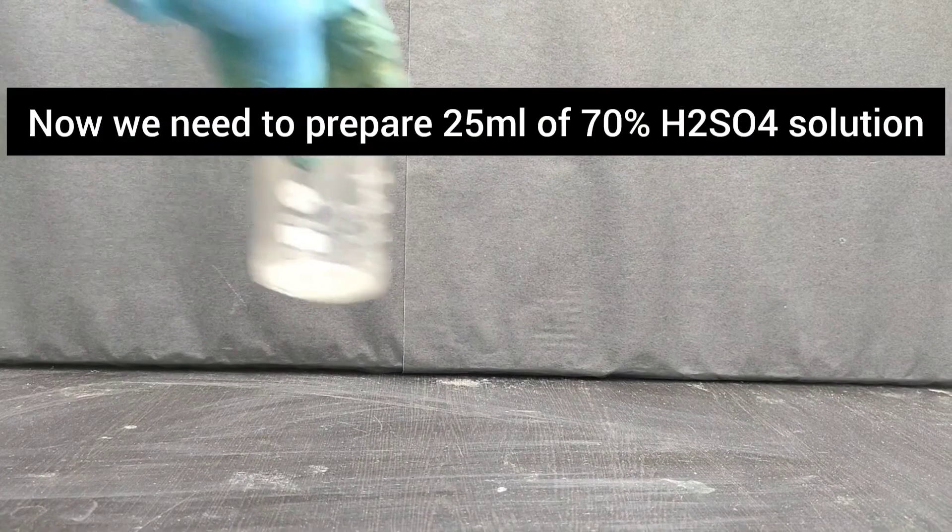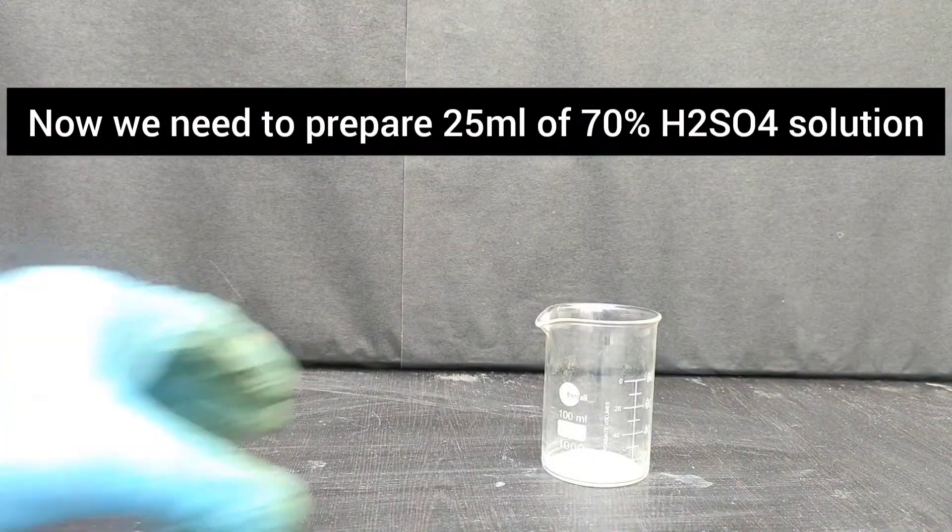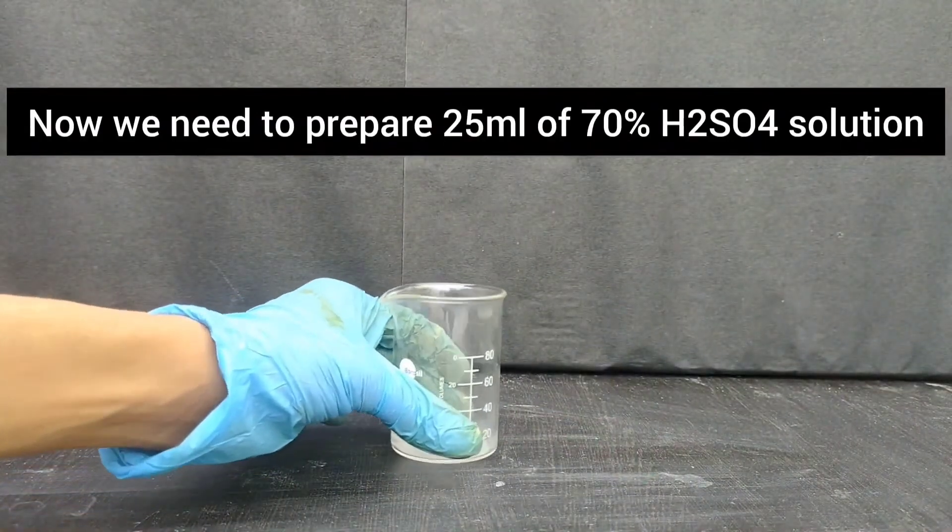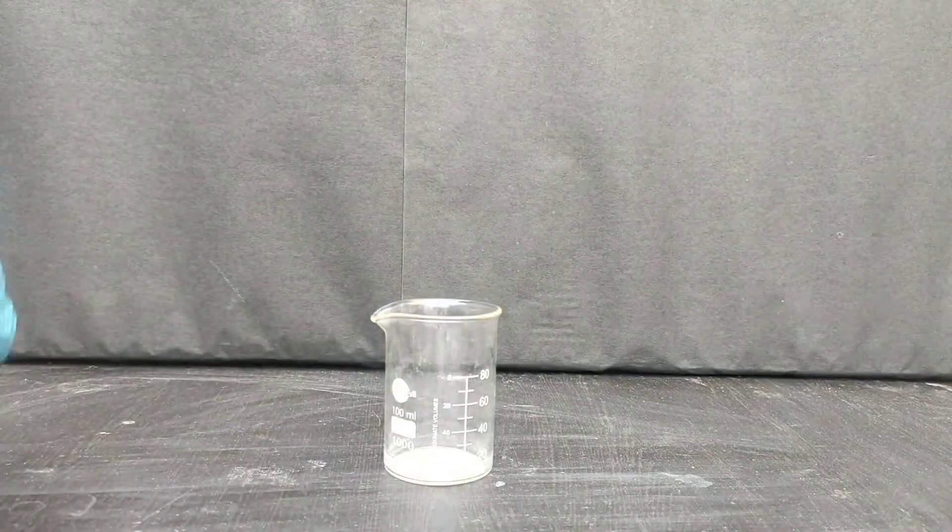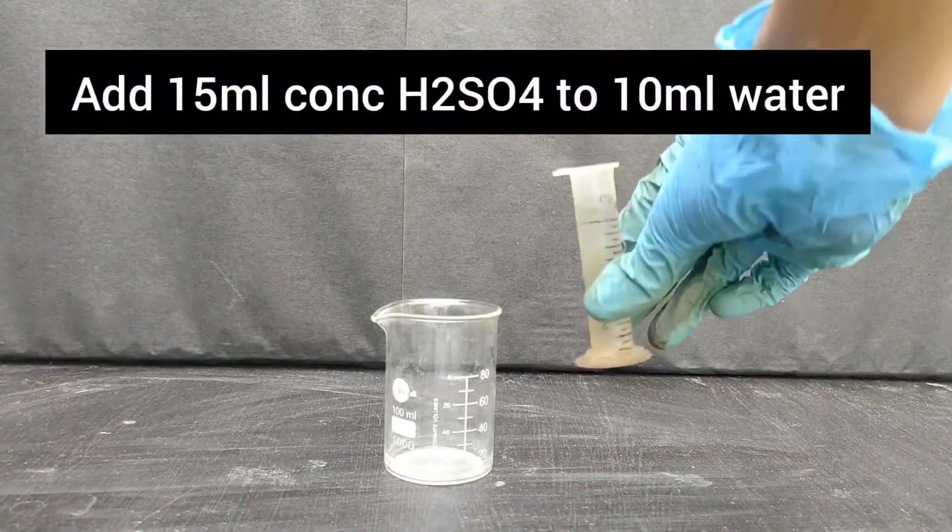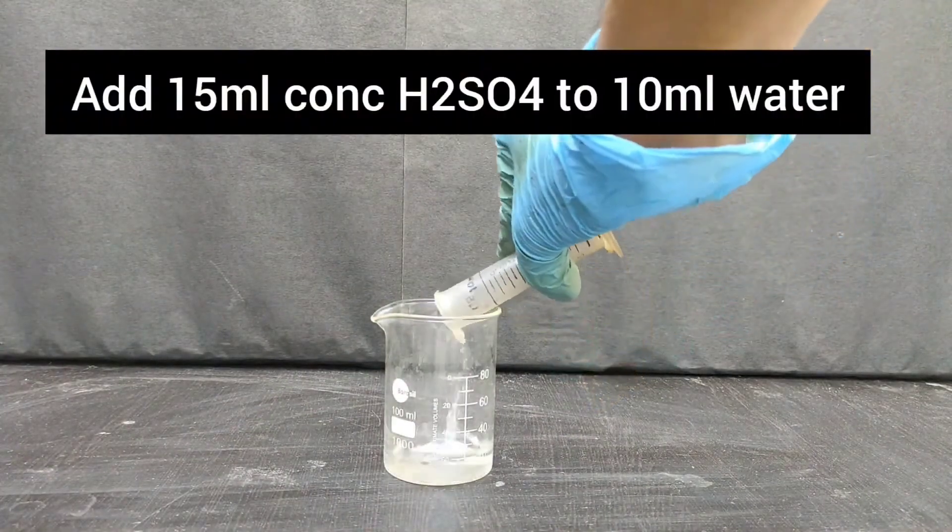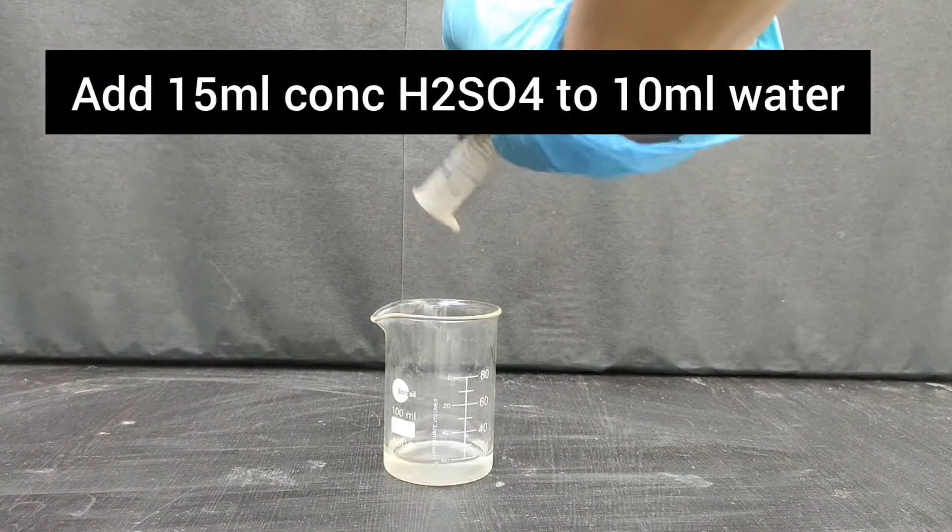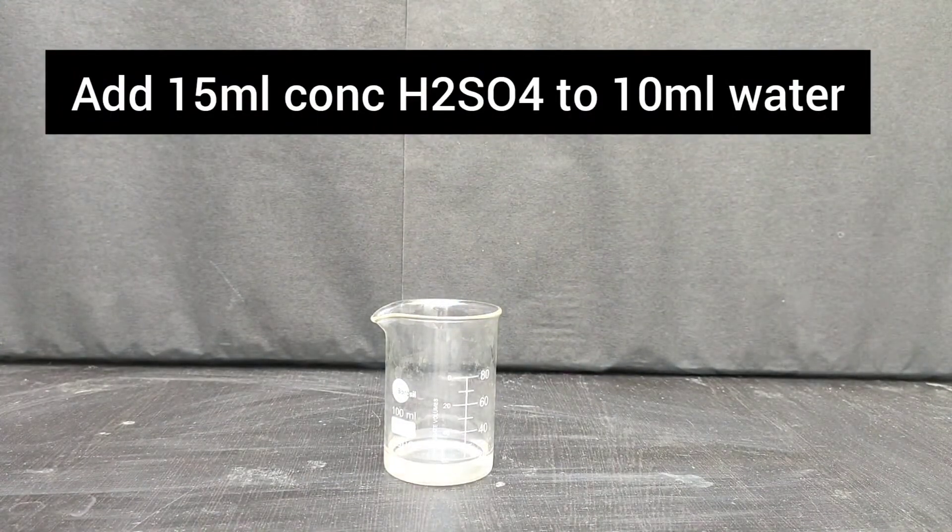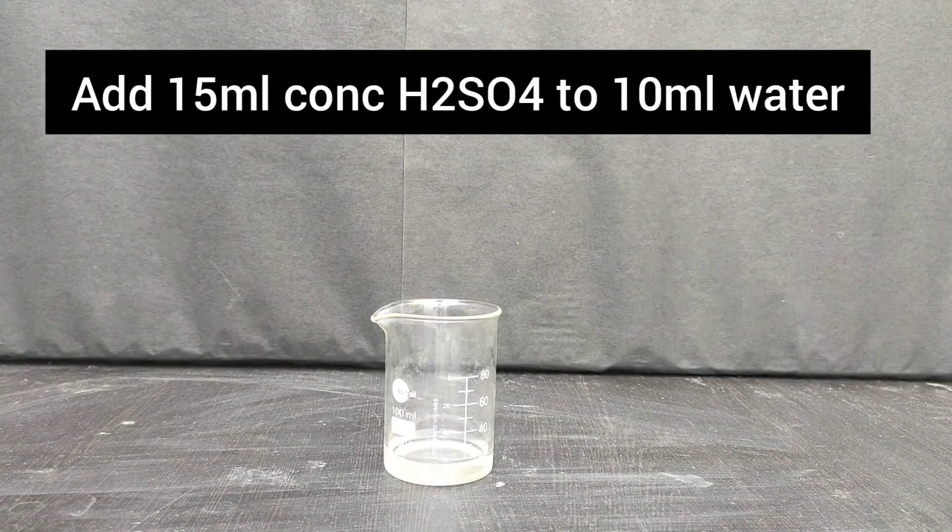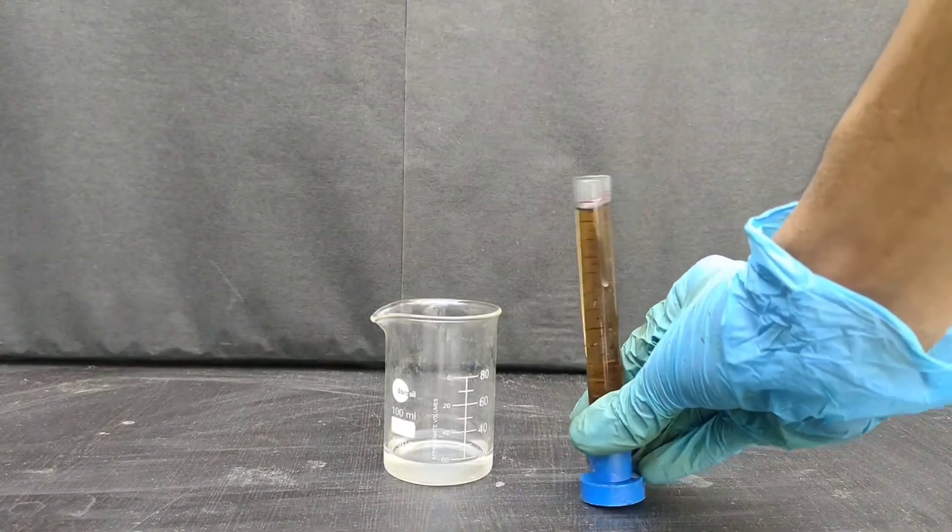Now, we will prepare 25 ml of 70% sulfuric acid solution. For that, in a beaker, we will take 10 ml of water, and to this, we will add 15 ml of concentrated sulfuric acid.